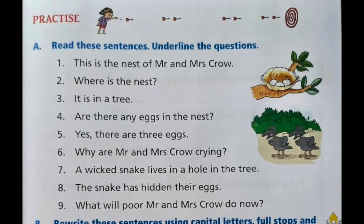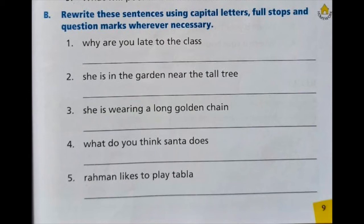Now let's move to Section B. 'Rewrite these sentences using capital letters, full stops and question marks wherever necessary.' We will read each sentence and wherever required, we will put the capital letter, a full stop or a question mark according to the sentence. Let's read number one: 'Why are you late to the class?' — it is asking you something, so it is a question. W in 'Why' will be capital and there is a question mark at the end. Write it down.